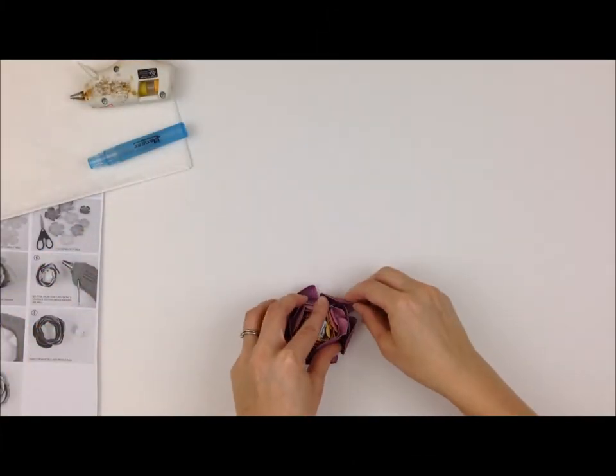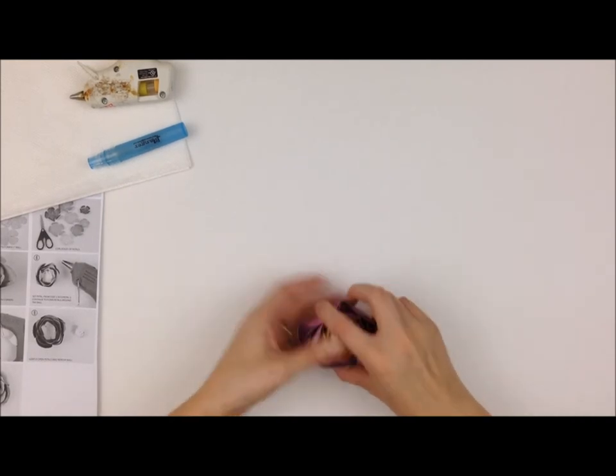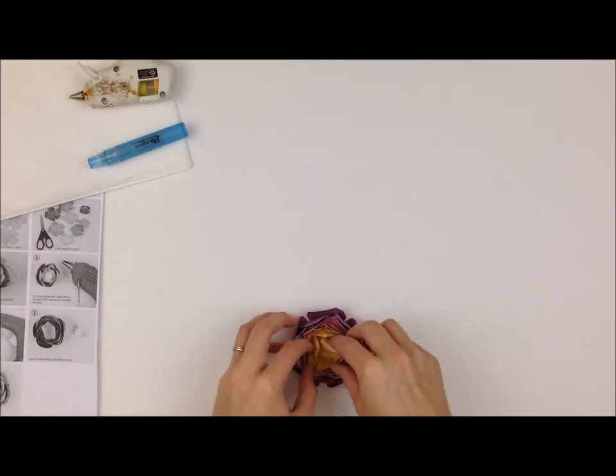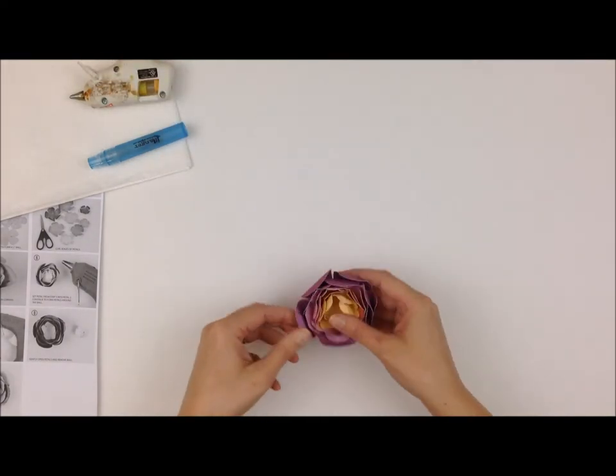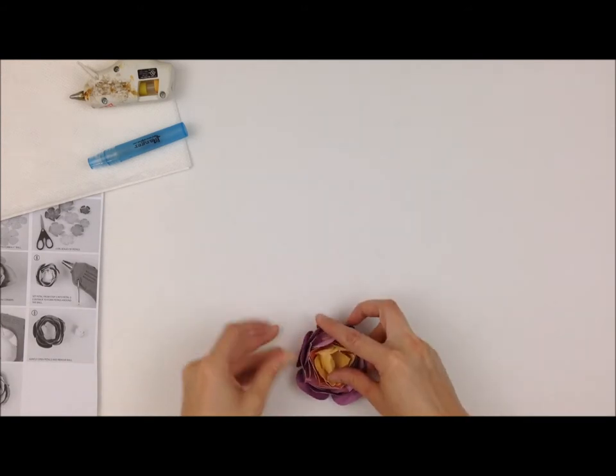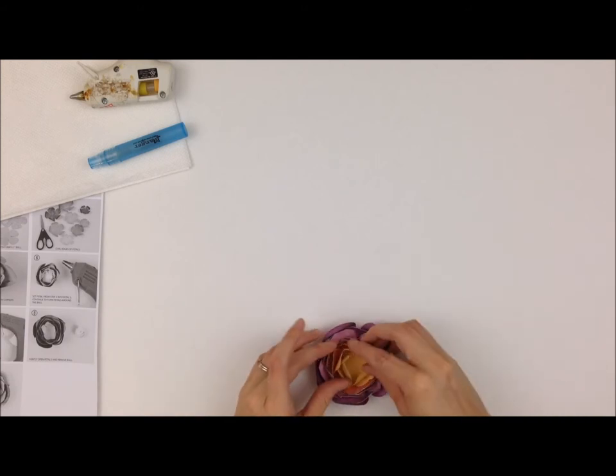So this is what the flower looks like when it is all assembled. Let me pull out the paper ball here so you can see the center. You can re-curl that, of course. And you can fuss with those petals as much as you want. Every flower you make is going to be unique and beautiful in its own way.